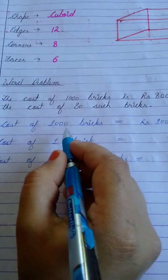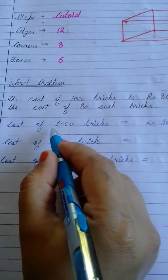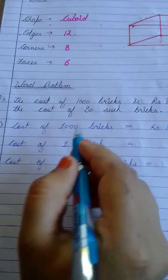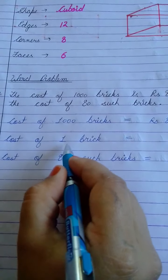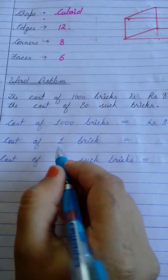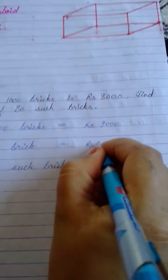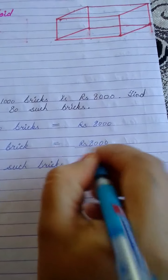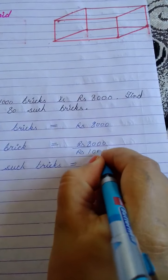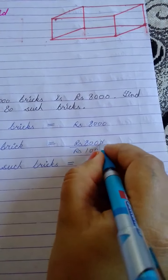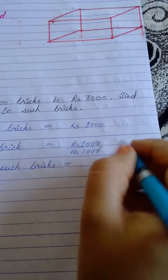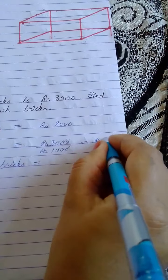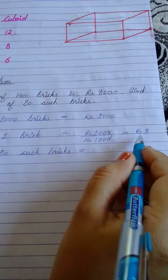And in your previous class I have already taught you that if you know the value of more, you have to calculate the value of one. What do you do? You always divide. So we will divide this eight thousand by the number of bricks that is one thousand. So zeros will be cancelled by zeros and what you will get is rupees eight. So the cost of one brick is rupees eight.